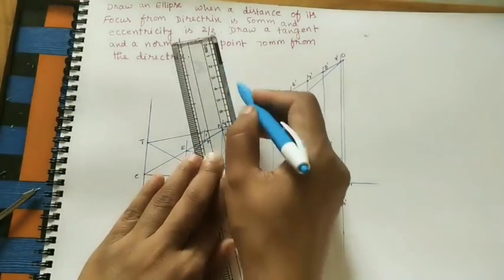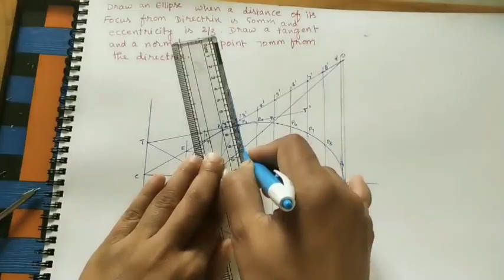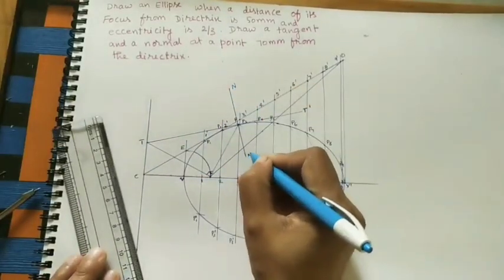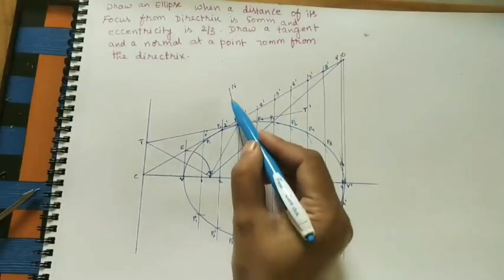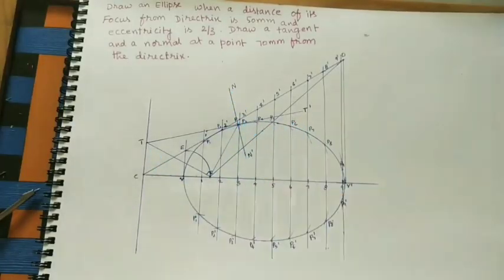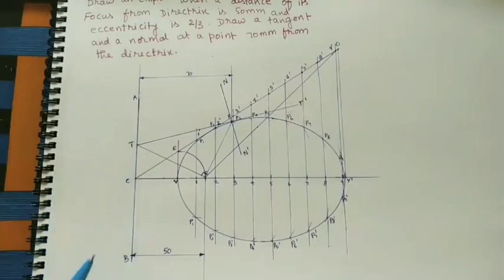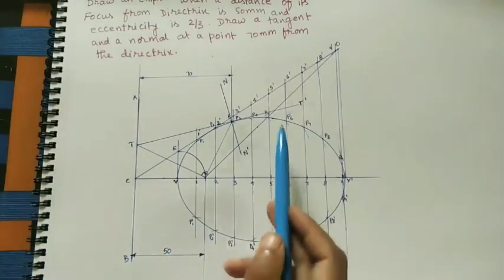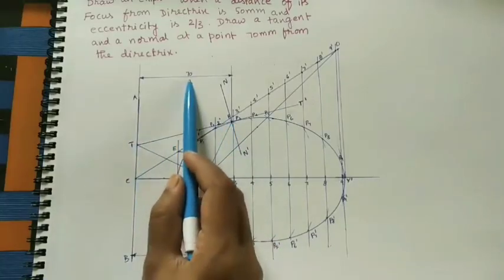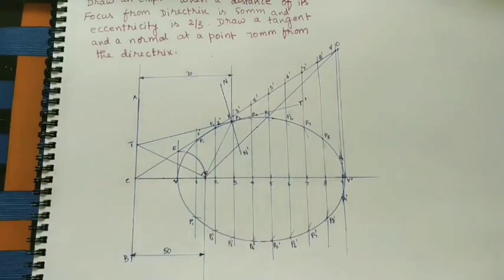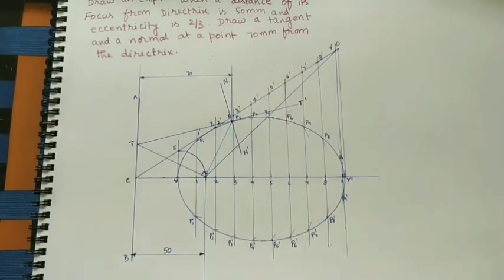Take this intersection point as T — do not extend this line beyond the directrix; take the FP line only up to the directrix. FP line is perpendicular to FP, this angle is 90 degrees. Now join T and P — it is the tangent to the curve, marked as T–T dash. Since the normal is perpendicular to the tangent, at P take 90 degrees to the tangent line. Join this point to P — it is the normal, marked as N–N dash. The angle between normal and tangent is 90 degrees. Mark the dimensions: CF distance is 50 mm and the P-to-directrix distance is 70 mm.